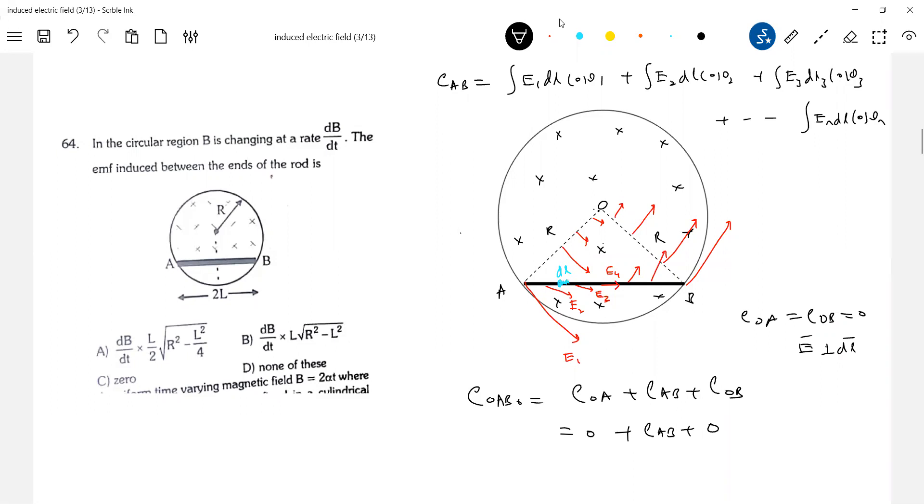So area of this triangle, length is L. So this is a triangle. What we have now? L, this is R, root of R square minus L square. So half into, this will be half into L into root of R square minus L square times dB by dt.